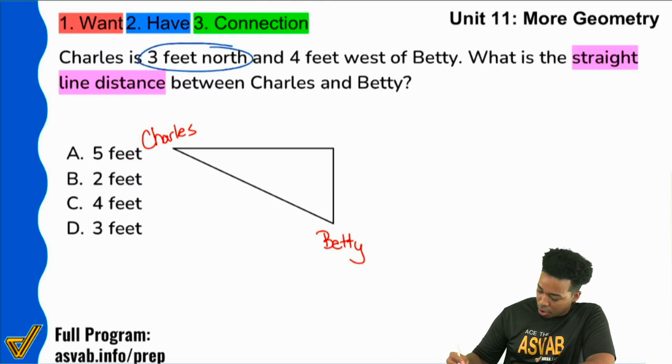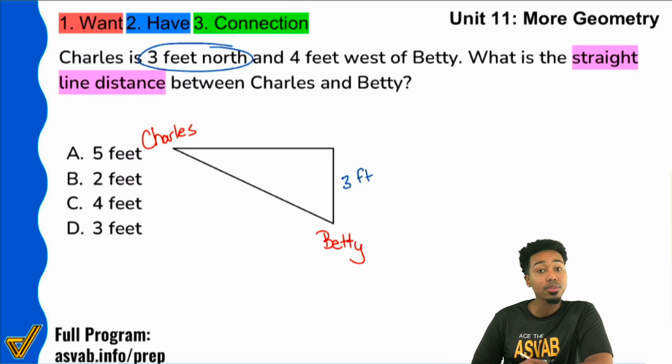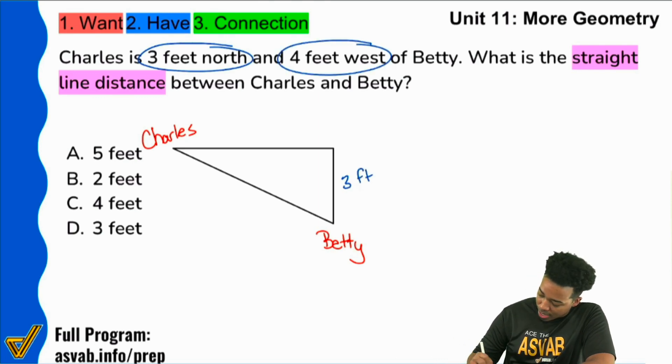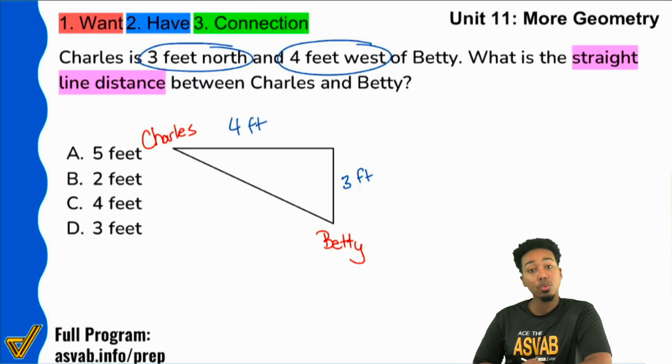And Charles is over here. Let me just show you what's going on. Well, this is super straightforward. So we have three feet north, Charles is three feet north. And then we have four feet west. So this is right here, four feet to the west. So again, from Betty, Charles is three feet north and four feet to the west. Cool.